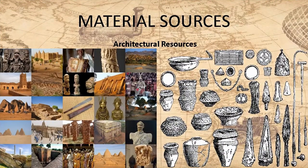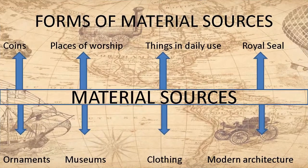Children, let us come to another source, that is material sources. Material sources are those sources which come under the category of architectural resources, in the forms of monuments, buildings, seals, coins, ornaments, museums, etc. Material sources deal with physical sources such as coins, places of worship, things in daily use, royal seals, ornaments, museums, clothing, and modern architecture. Let us understand each one of them one by one.